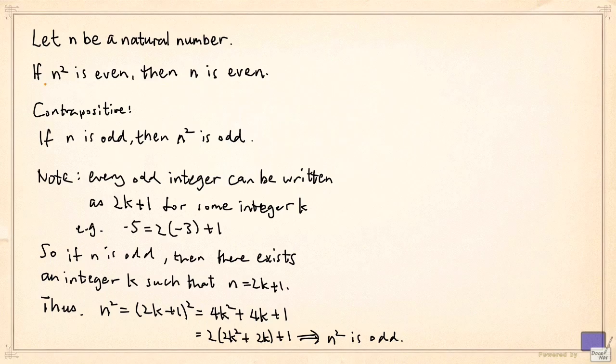For example, to prove this statement up here, what you would do is you would first assume the conclusion is false. In other words, suppose that n is not even and try to obtain a contradiction. And this is essentially what we have done here. We are assuming that n is odd and obtain that n squared is odd. And n squared is odd is a contradiction to the assumption that n squared is even in the original statement.